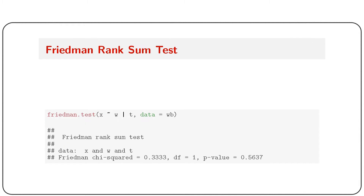The third way uses the formula format: friedman.test(x ~ w | t, data = wb). The p-value is also 0.056 — the same result as the previous method but with arguments given in formula format.